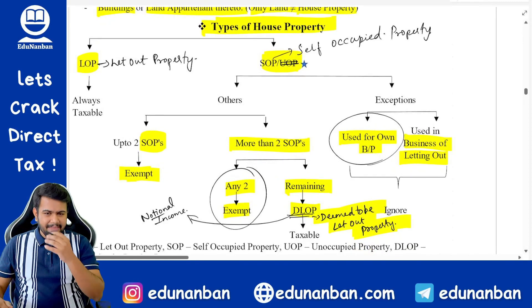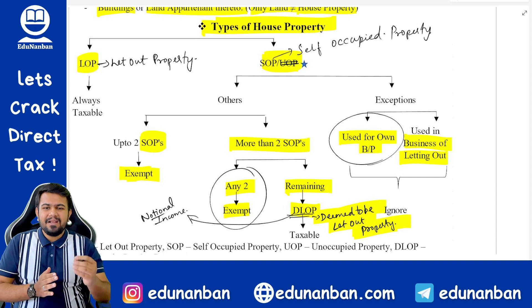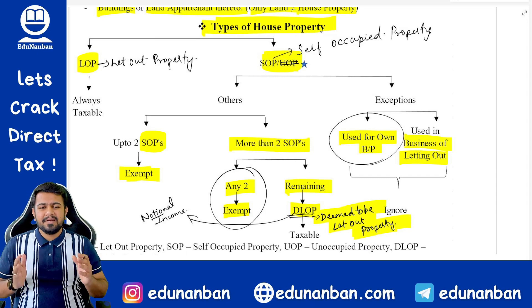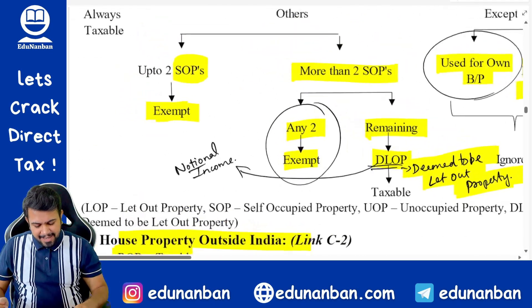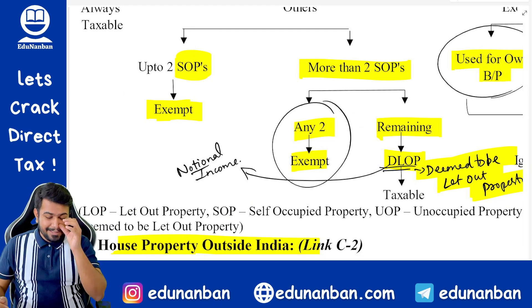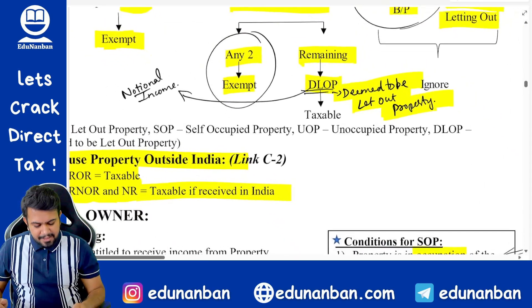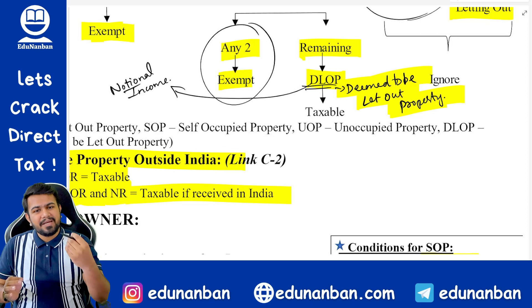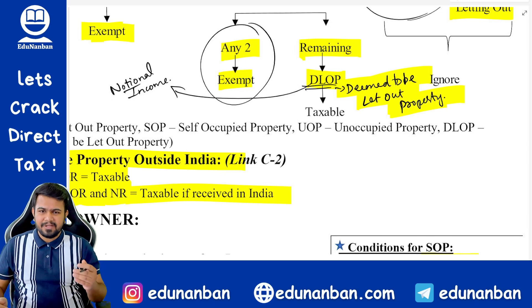There are two major types: LOP and SOP. LOP means let out property — the property that has been given on rent. SOP means self-occupied property — property in which the assessee himself is residing, or he is not able to reside because he is living in some other city in a property that does not belong to him. In income tax, up to two self-occupied properties are fully exempt, but if an assessee has more than two self-occupied properties, any two can be claimed as exempt and the remaining will become DLOP — deemed to be let out property — which brings a notional rent concept where tax is charged on calculated notional rent.